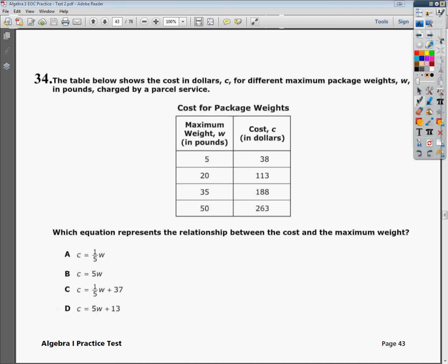The idea is my left set of data, this would be my independent variables, or in this case it's my W, and it should work out to where I get my dependent variable or my C. All the answer choices give you a relationship between C and W, so we're just going to see if we can plug in the first set of values and get the second set.